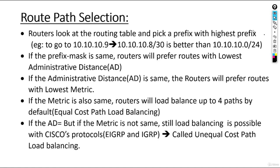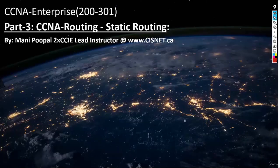For the CCNA exam, you must know the route selection algorithm. The order is: first, highest prefix mask wins; then, lowest administrative distance; then, lowest metric; finally, if equal, equal-cost path load balancing.